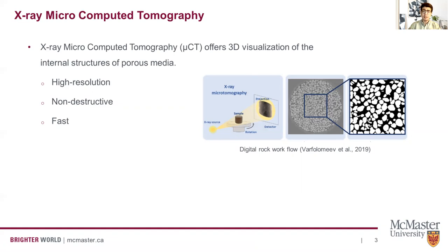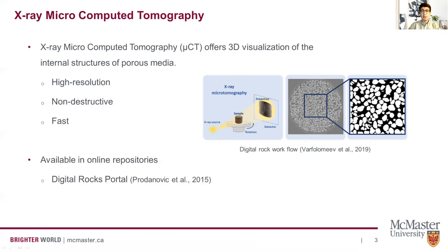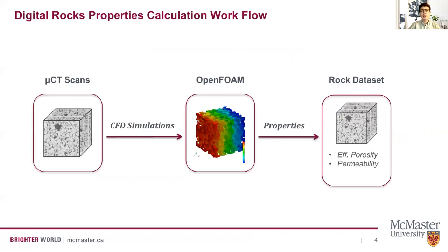As a result of this technology, we now have unprecedented access to three-dimensional visualizations of various subsurface materials, which are readily available in online repositories such as Digital Rock Portal. The output of CT scanning are grayscale images that need to undergo the segmentation process to obtain a segmented pore structure of the rock. Having obtained the internal structures of the rock, we can perform numerical experiments to extract important physical properties of the sample.